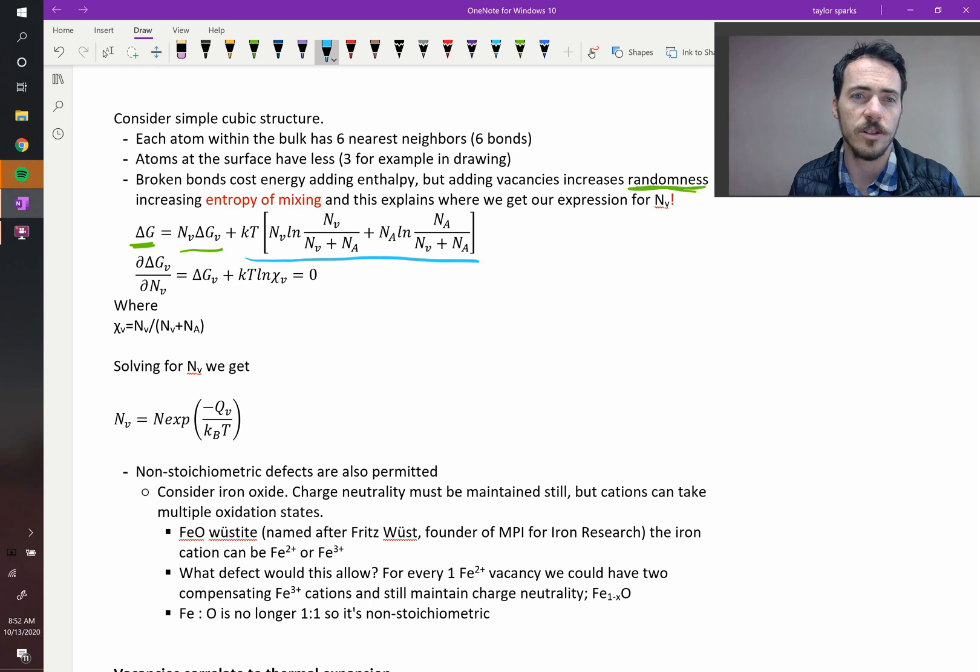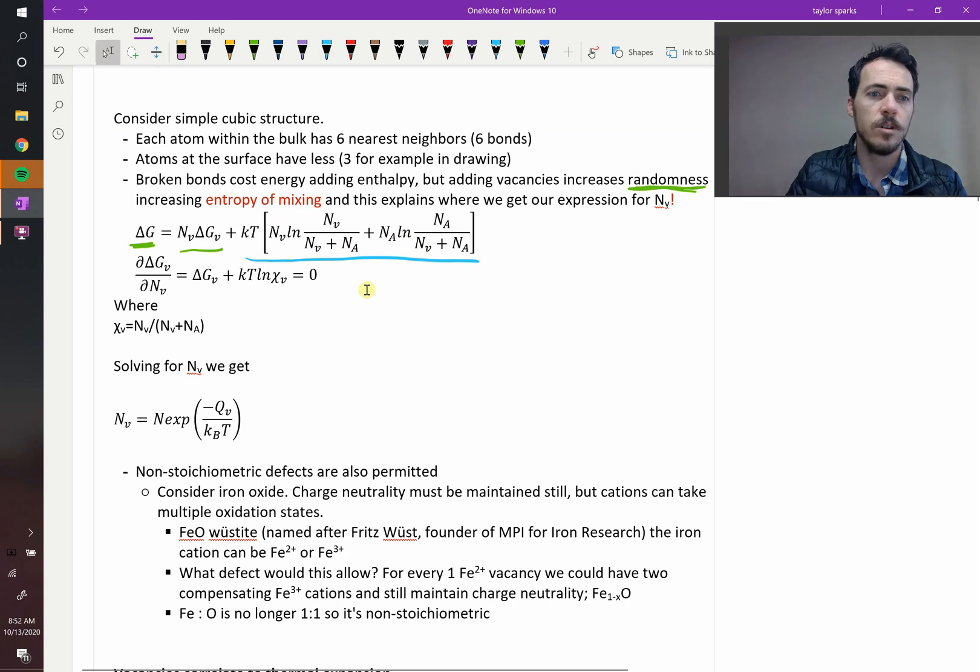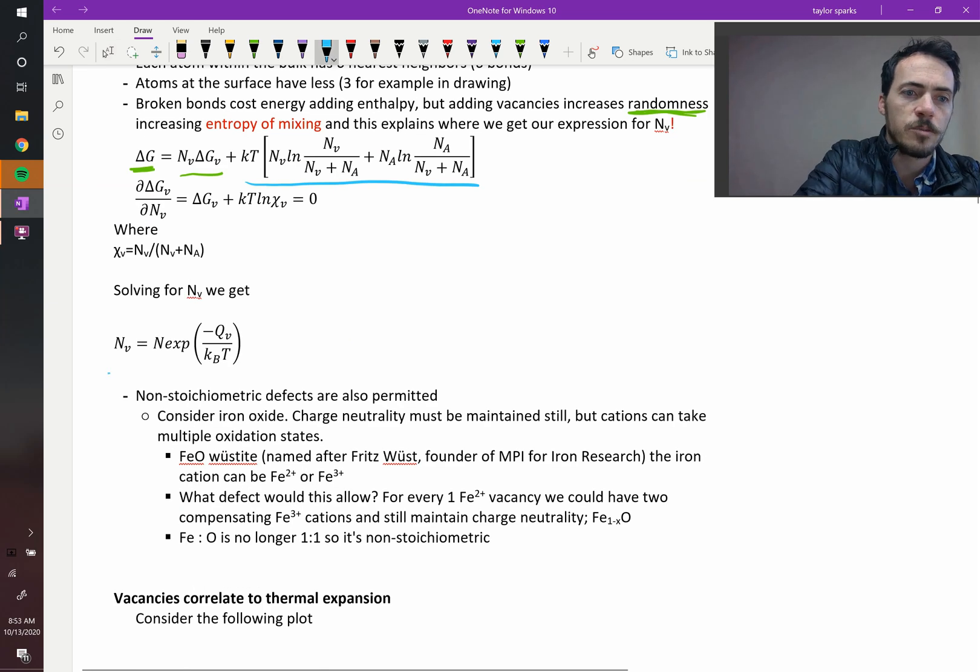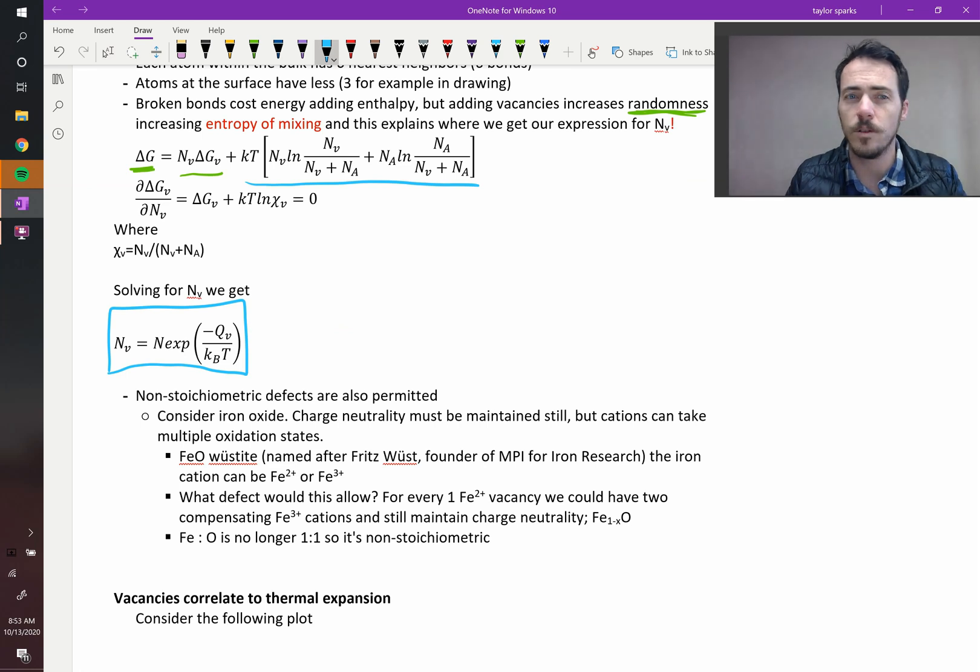So what's going on in this expression? You've got NV, we know that's the number of vacancies. You've got NA, your number of atoms total. So you have these two expressions, and when you take those together, that gives you your entropy of mixing. So that actually, I'm going to spare you the algebra, but is how we get to this expression for NV equals N times exponential of negative QV over KVT. So that is the expression for how many vacancies we have and why it's a thermally activated process.